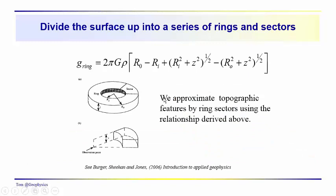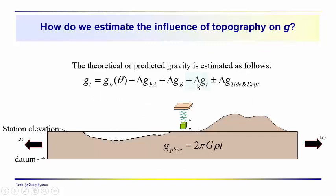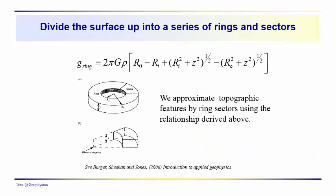And those two terms go together, we have the expression for the plate, and then we have to introduce the expression for the topography. The way the topography is usually accounted for is using this ring formula, and we'll talk about that in a minute. This diagram here is from Berger, Sheehan, and Jones.